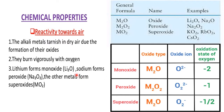Reactivity towards air: alkali metals, when they react with oxygen, they give oxides. But here, they form three different types of oxides. One is normal oxide, the other one is peroxide, and the last one is superoxide. Oxide means they have the O²⁻ ion. For example, sodium oxide — sodium is +1, oxide is −2, so the sodium oxide formula is Na₂O.